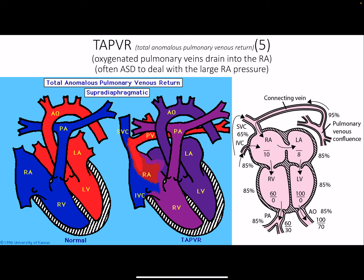TAPVR — Total Anomalous Pulmonary Venous Return. The pulmonary veins are supposed to connect into the left atrium, but in this condition they connect into the right atrium instead. An atrial septal defect may develop just to deal with the resulting large right atrial pressure.